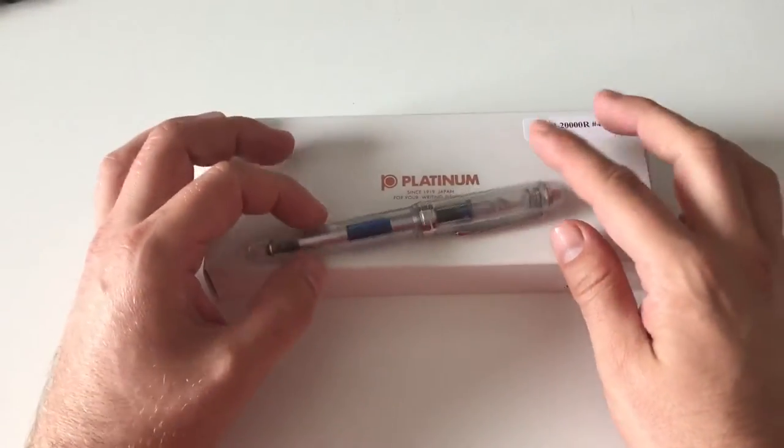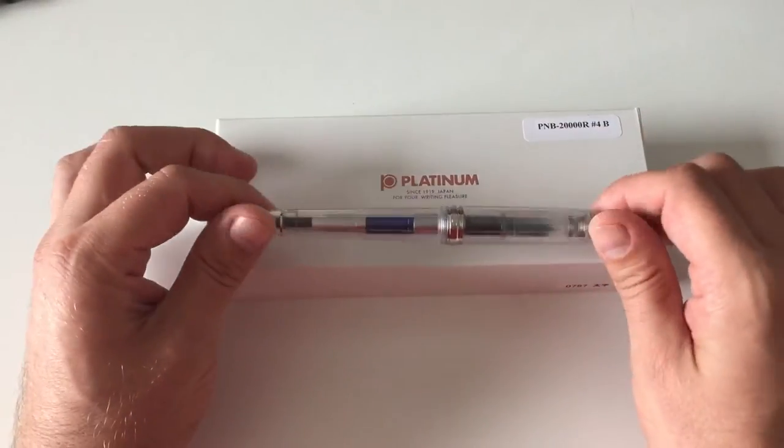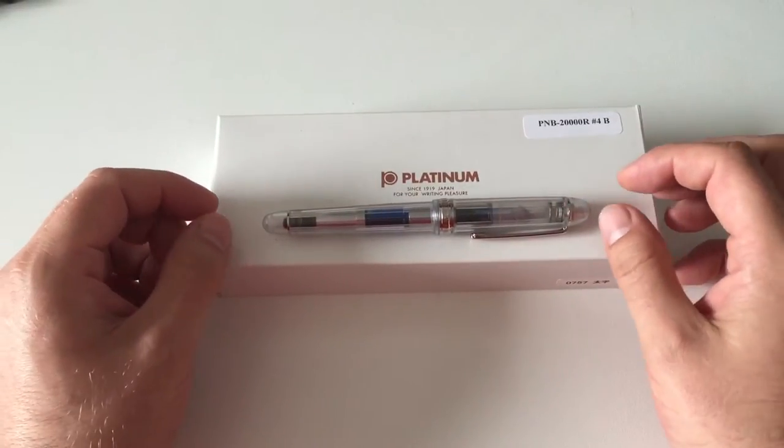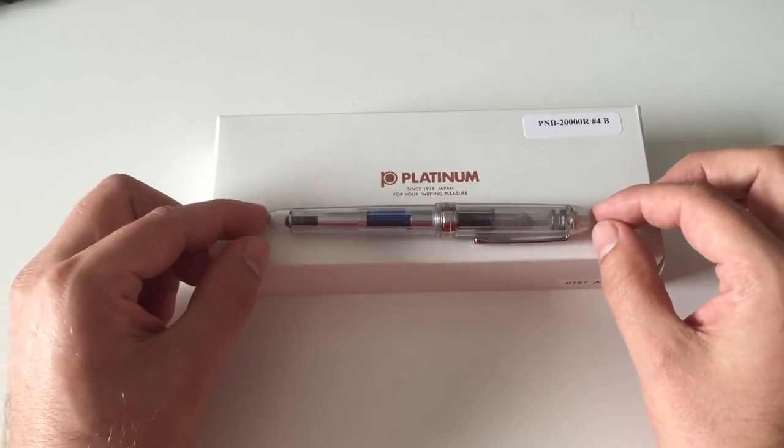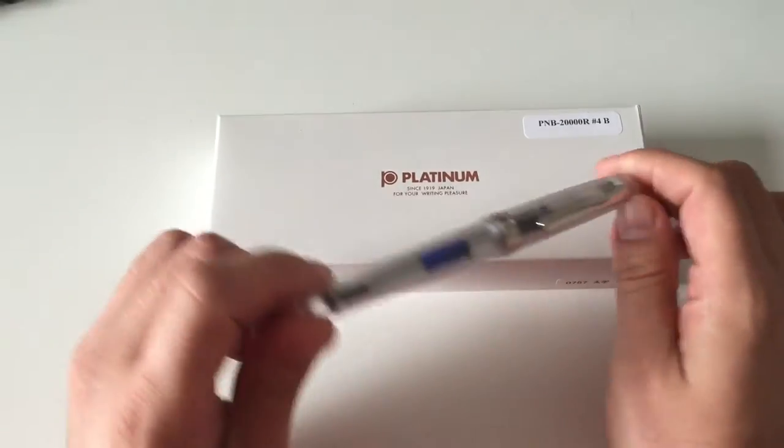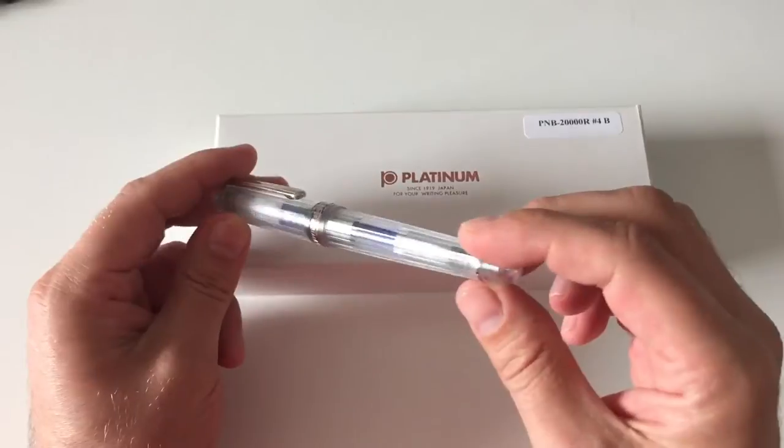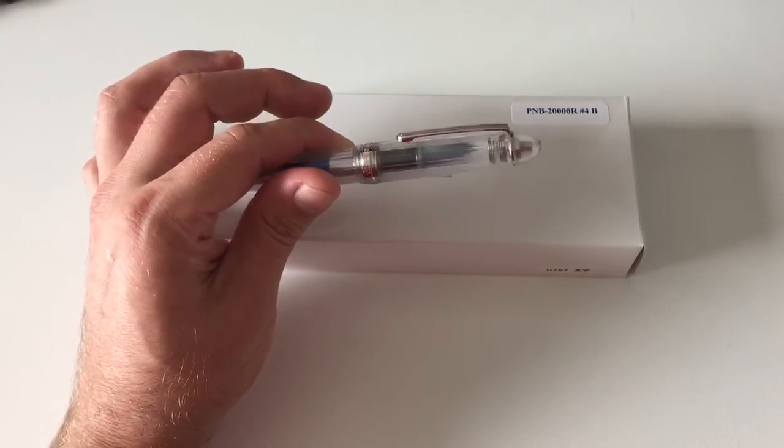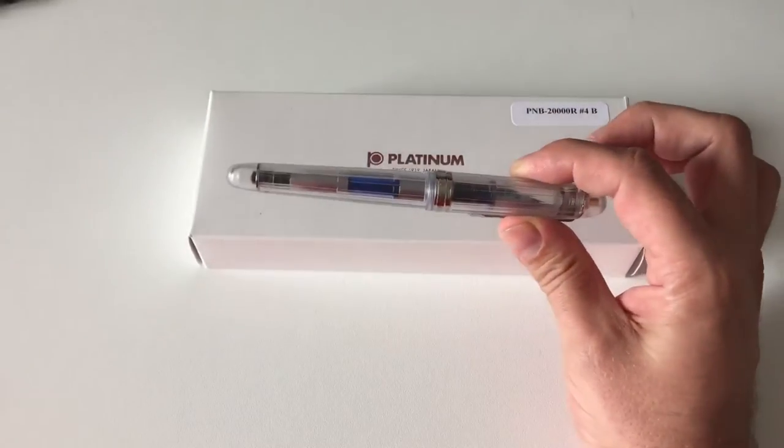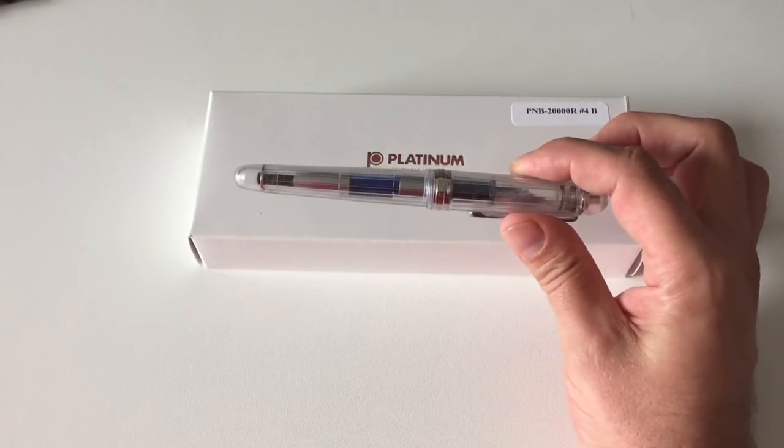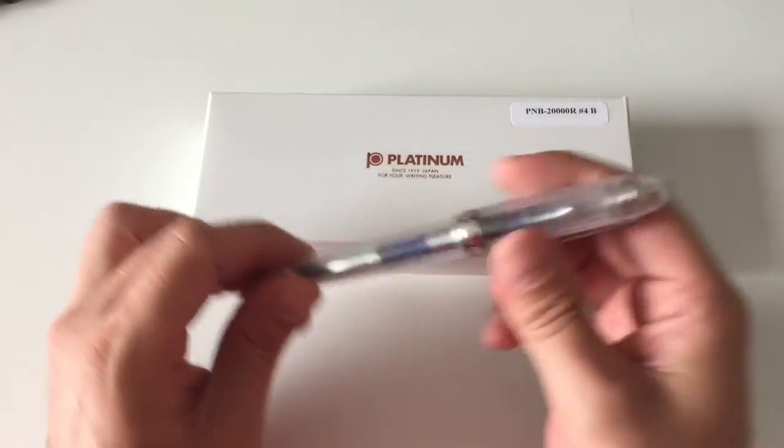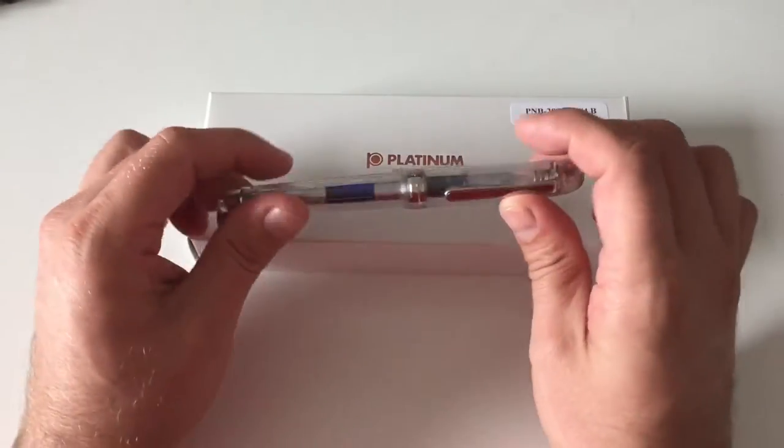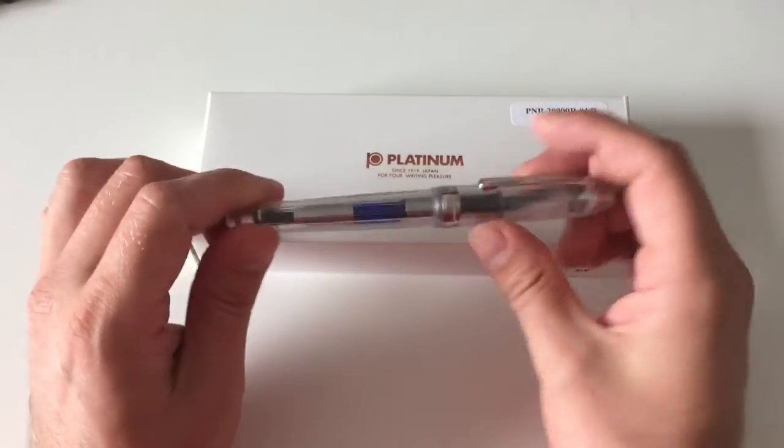Hi guys, this is Criveli again with another fountain pen review. Today I'm going to review the Platinum Century 3776 Nice Pour fountain pen, which is a limited and special edition. I've seen this pen retailing for anything between $150 and $300, but I think around $250 to $300 was its original price.